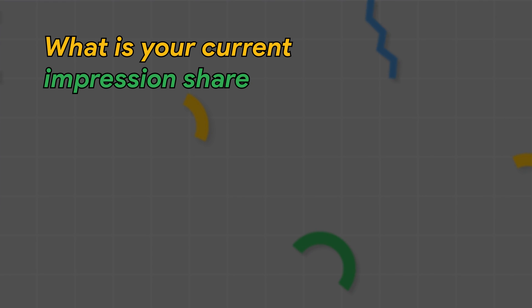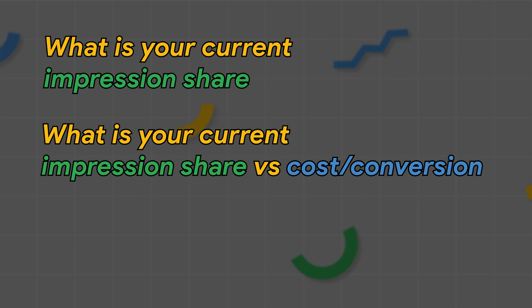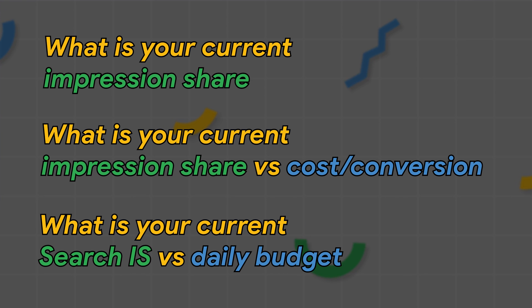When it comes to setting up your budgets in your Google Ads campaigns, there are three core questions that you need to ask. The first one is: what is your current impression share? The second one is: what is your current impression share versus your cost per conversion? And the third and final one is: what is your current search impression share versus your daily budget? That's what we're going to be going through in today's video.